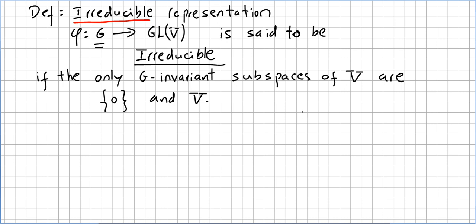Please check the previous videos for the concept of G-invariant subspace of a vector space. So if the only G-invariant subspaces of the vector space V are the trivial ones — so 0 and V itself.